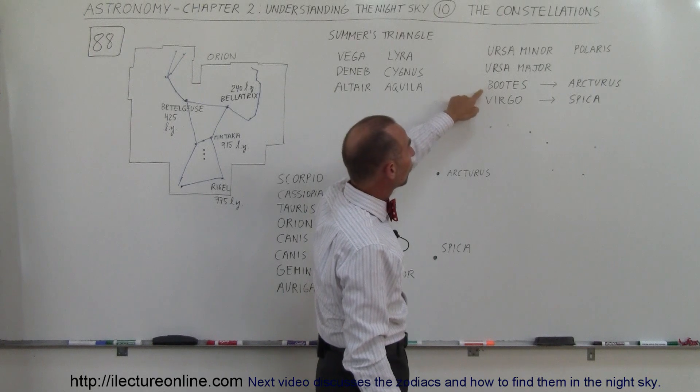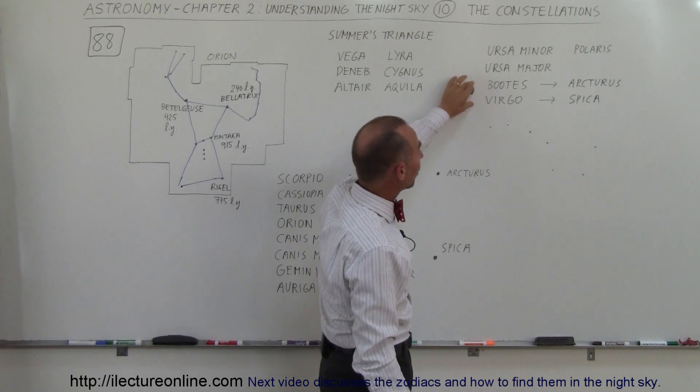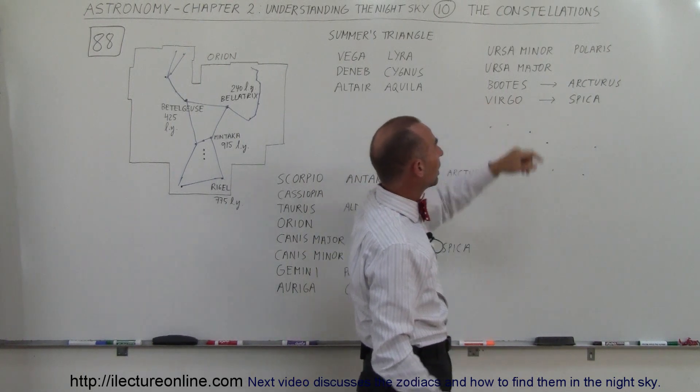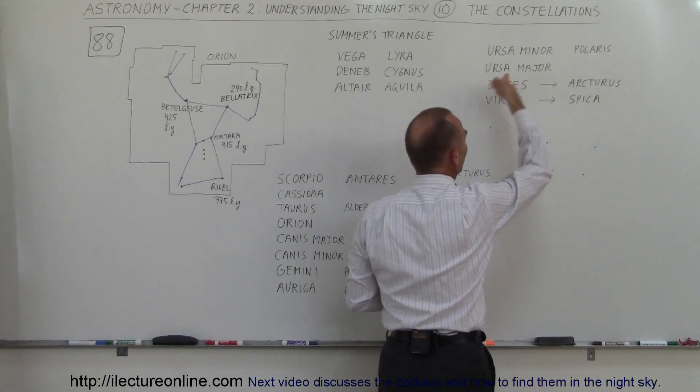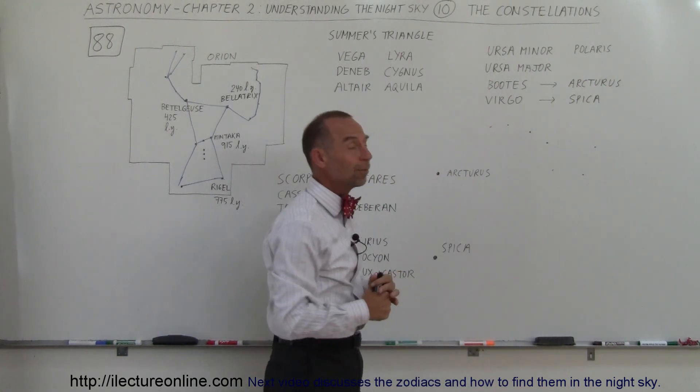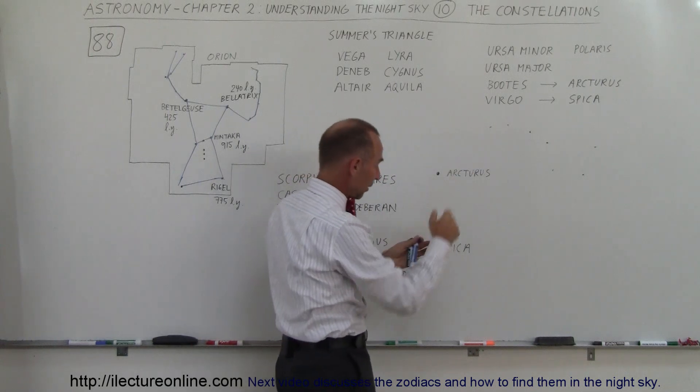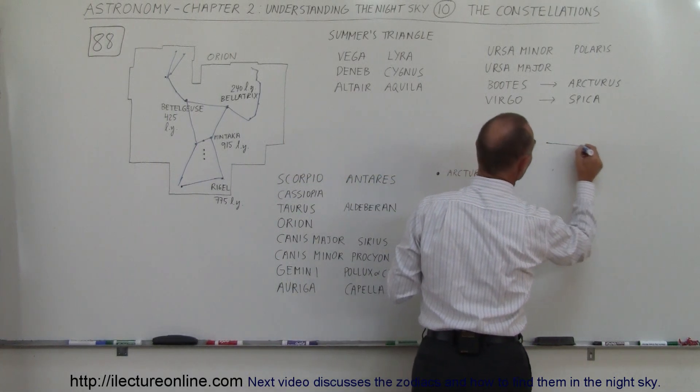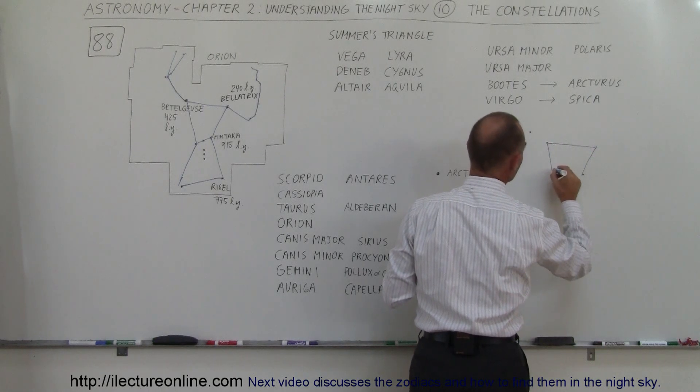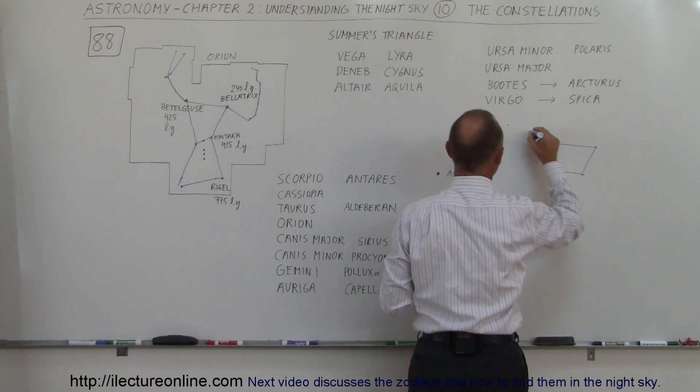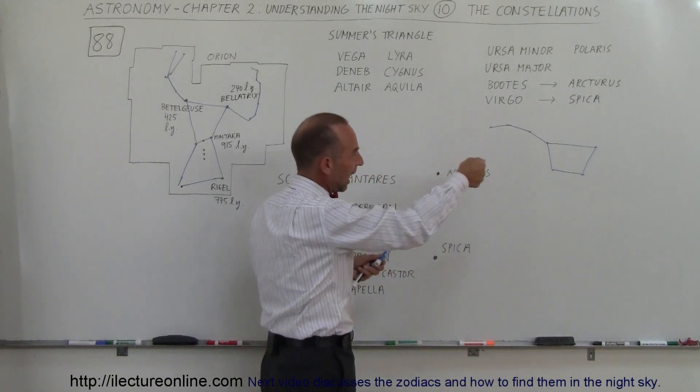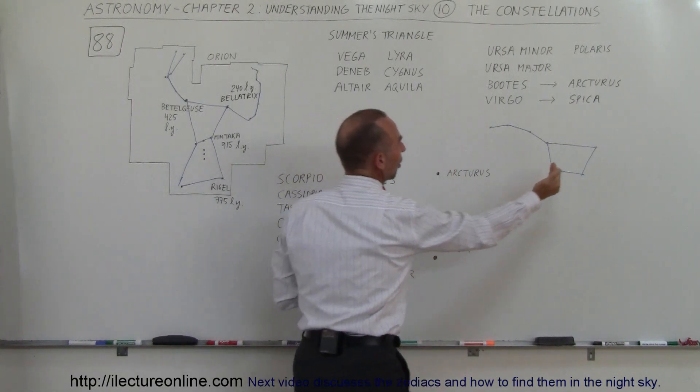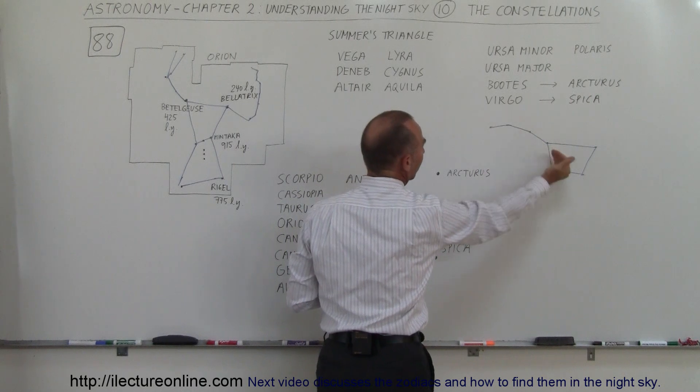Then we have Boötes and Virgo, two large stars which are part of the, I'm sorry, I'm talking about Arcturus and Spica, two large stars which are part of the constellation Boötes and Virgo. Now how do you find those? Well here I drew kind of the Ursa Major, the Big Bear as we call it. Sometimes we also call it the Big Dipper. And it looks kind of like that, it almost looks like a pot if you think about it, with a handle like that. And this is the arc of the Big Dipper, Ursa Major.